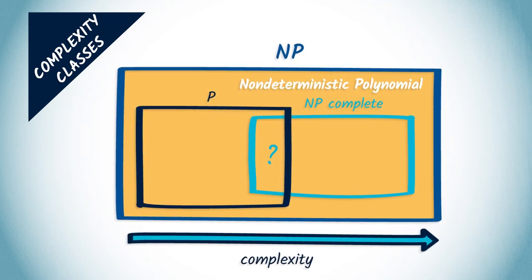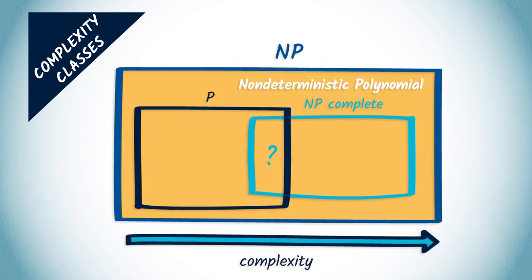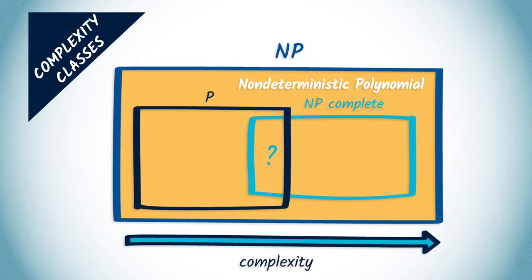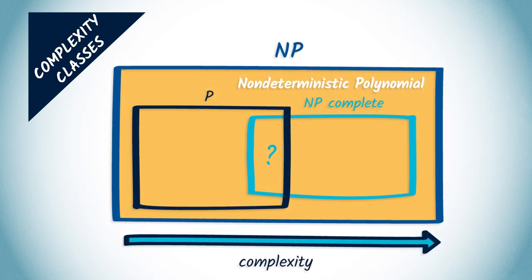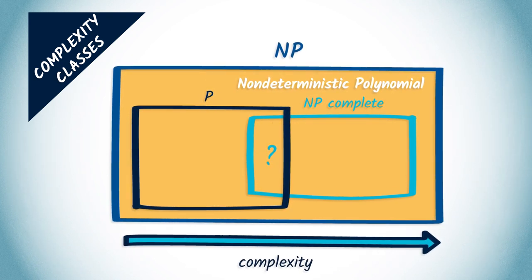Roughly speaking, a decision problem is an NP problem if we can check quickly — with polynomial complexity — whether a candidate solution is indeed a solution. Without going into too much detail, we often need to use algorithms with an exponential complexity to solve NP problems.